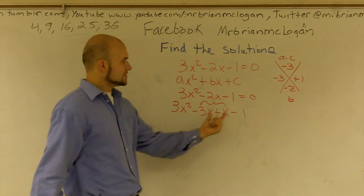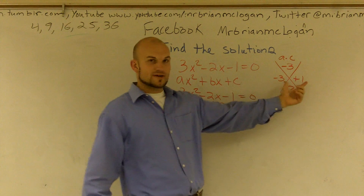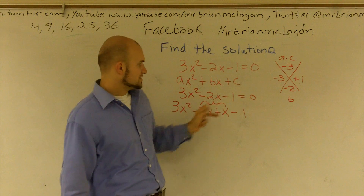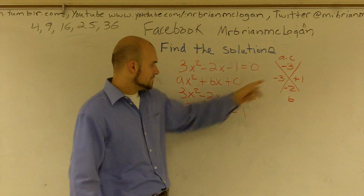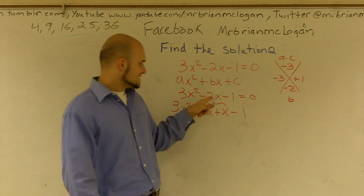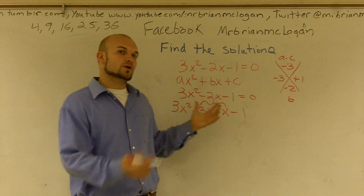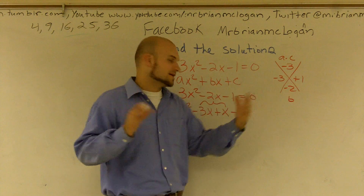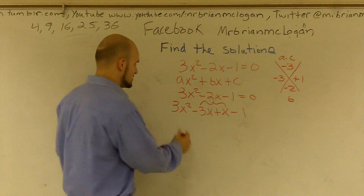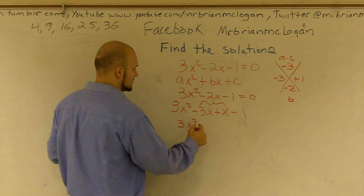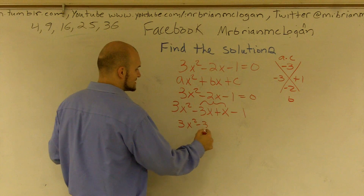Notice how these two terms, which are my two factors here — you see the coefficients negative 3 and 1 — is the exact same thing as my original problem, but I just rewrote it spread out. And the reason why it's important is because now I can group these two.